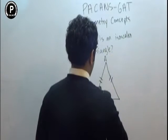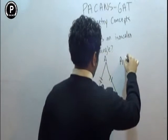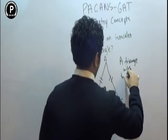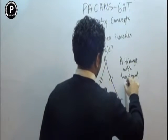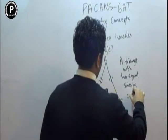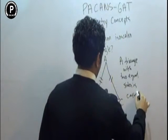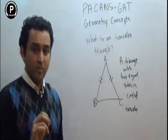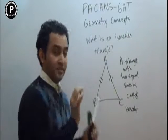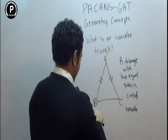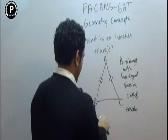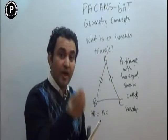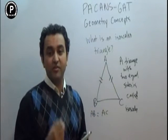A triangle with two equal sides is called isosceles. If the two sides are equal — this side AB and this side AC — if they are equal, then the opposite angles will also be equal.